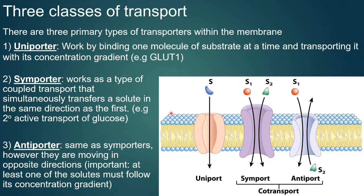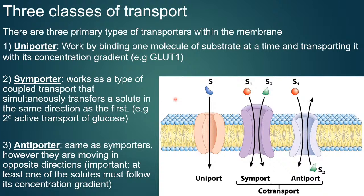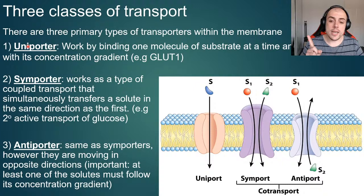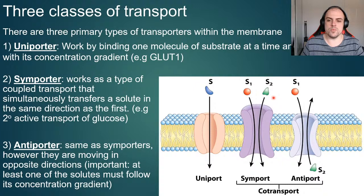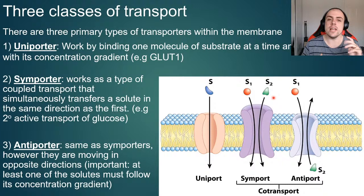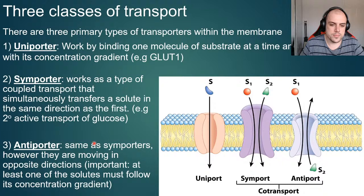Three main classes of transporter: a uniporter — 'uni' meaning one — moves one molecule at a time, typically down its concentration gradient; an example is GLUT1. A symporter moves multiple substrates, but both moving in the same direction. An antiporter transports two things moving in opposite directions.